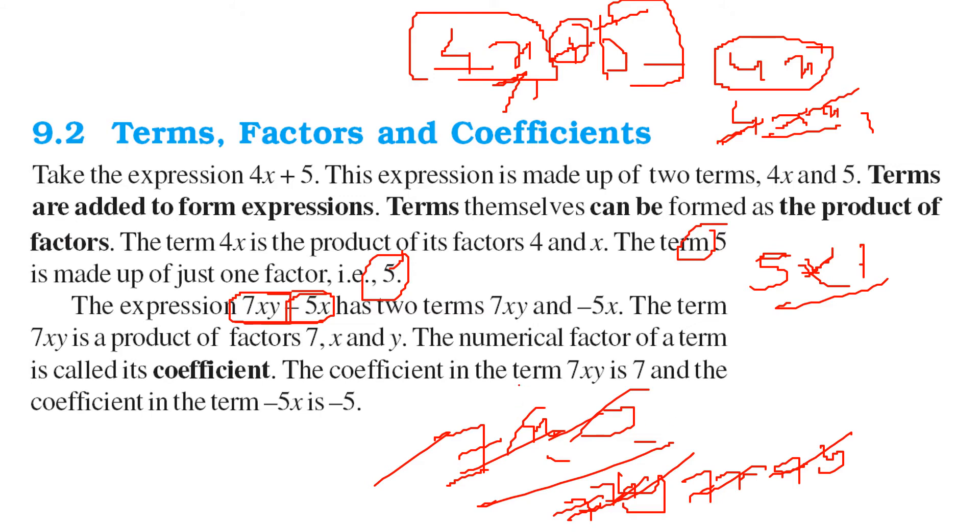So all these are the factors, factors of 7xy. And the constant term here is known as the coefficient. The coefficient of 7xy is 7. The coefficient of minus 5x is minus 5. The negative sign is taken with the constant.